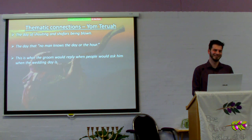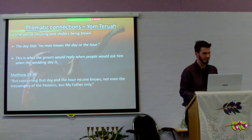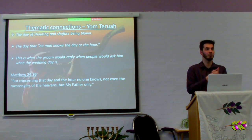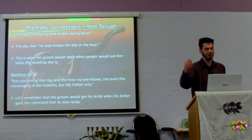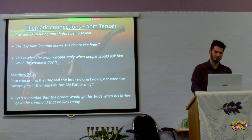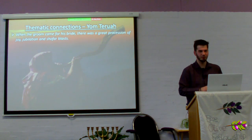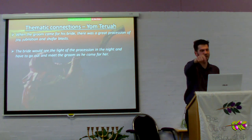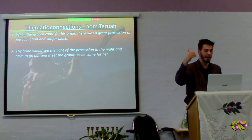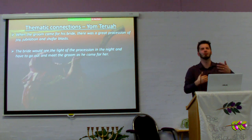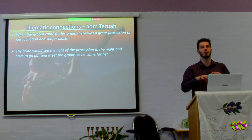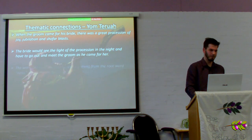'But concerning that day and the hour, no one knows, not even the messengers of heaven, but my father only.' He's referencing Yom Teruah and bridal talk in the same statement. The groom would get his bride when his father gave the command that he was ready — the groom didn't decide. When the groom came for his bride, there was a great procession of joy, jubilation, and shofar blast. The bride would actually see the light of the procession in the night and have to go out and meet her groom — because he would come for her, but she would have to go out and meet him. I love this idea: draw near to me and he shall draw near unto you. I believe this is also a reference to the moon — it's a type and shadow. The word nisuin, the wedding, means 'to take,' coming from the root naso, which means 'to lift up.'